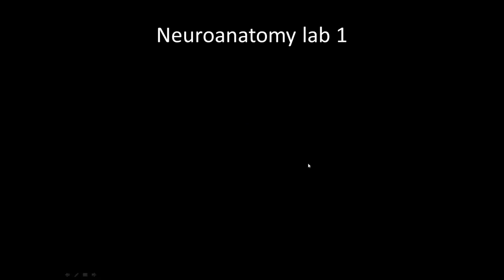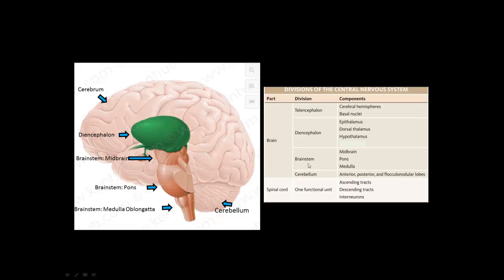Welcome to Neuroanatomy Lab 1. First we'll go over the basic components of the central nervous system. The brain has four divisions: the telencephalon, which is made up of the cerebral hemispheres and basal nuclei; the diencephalon, which contains anything with the word thalamus in it; the brainstem, made up of the midbrain, pons, and medulla; and last, the cerebellum.